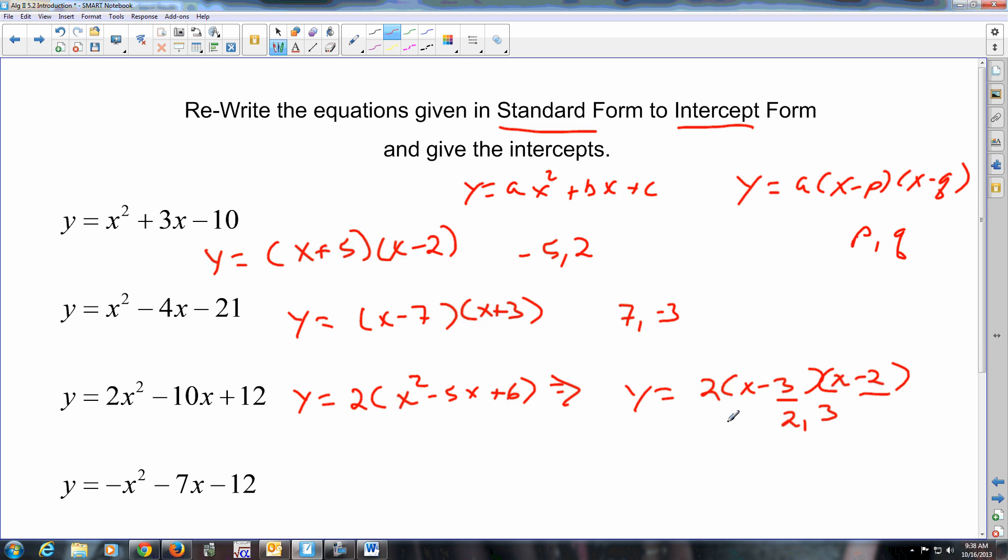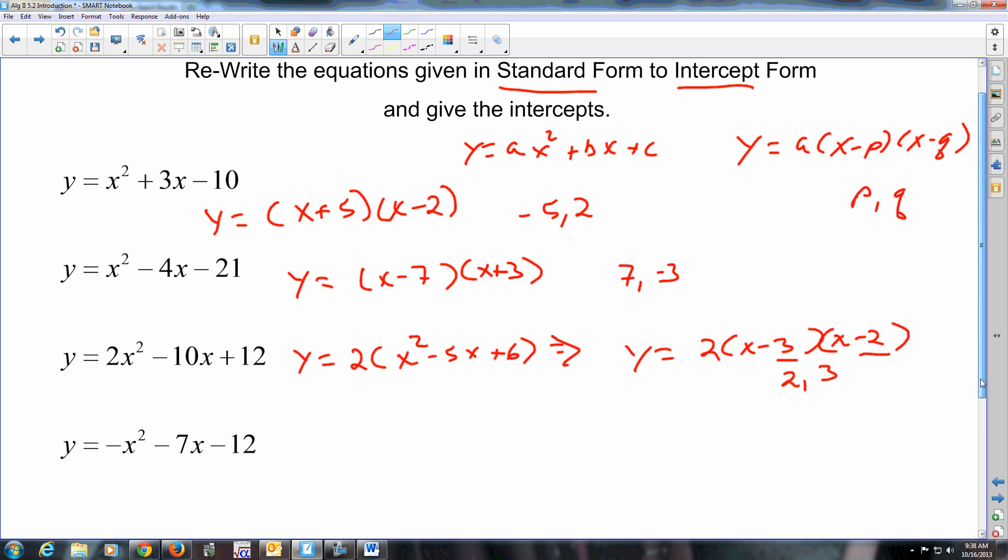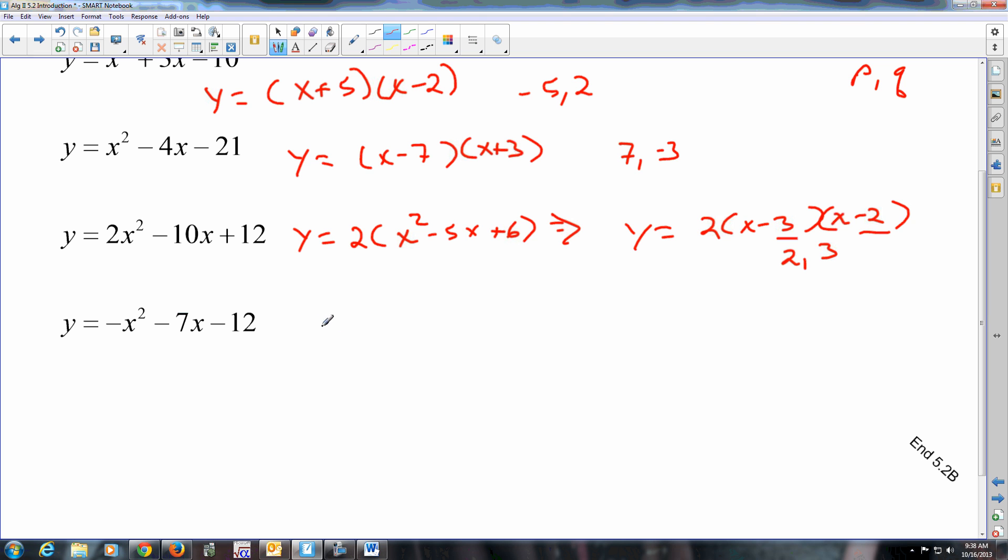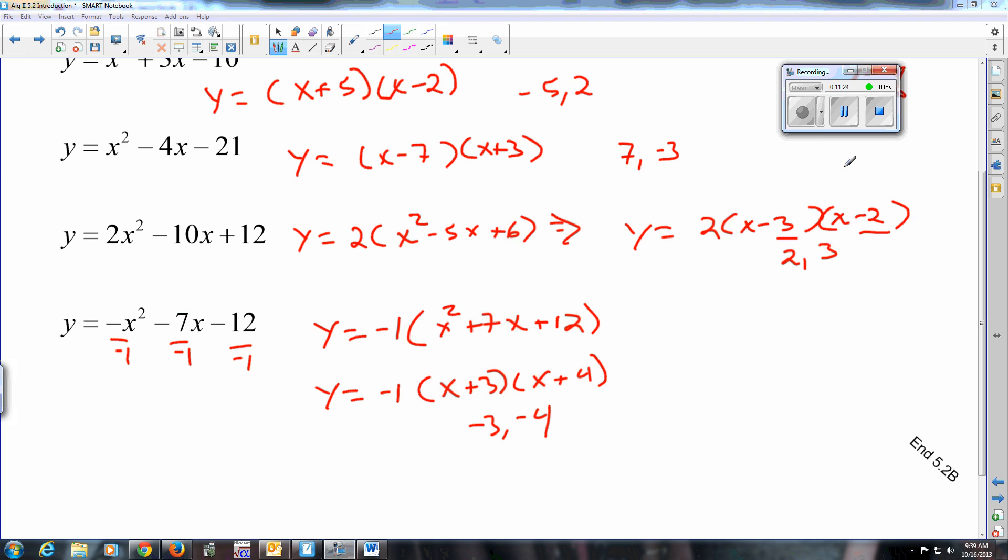When you have just a negative hanging out front, factor that negative out, negative 1. If you need to, help yourself see that you're pretending to divide a negative 1. It's still there. x squared plus 7x plus 12. And then you're going to factor that. Minus 1, x plus 3, x plus 4. And your x-intercepts then would be negative 3, negative 4. So that should take care of what you guys need to do for this one.